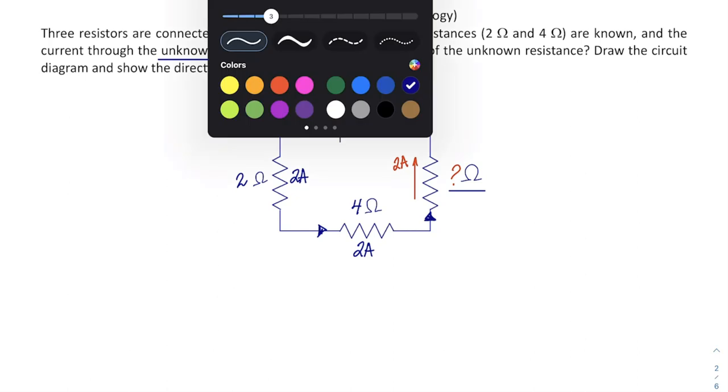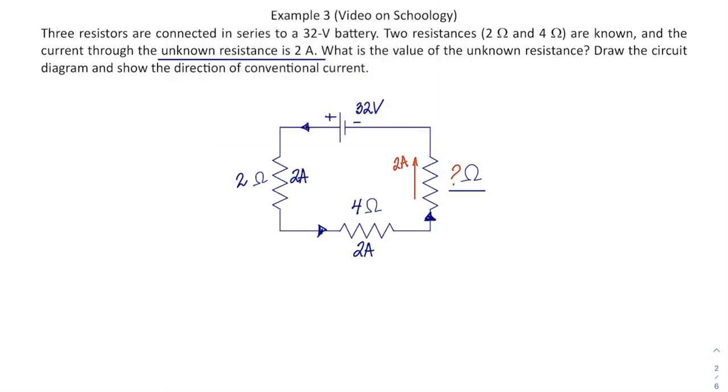If I know the amperage, in other words, if I know current and resistance, I should be able to figure out: two times two, this is 4V. Four times two is 8V. That's 12V.